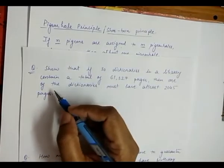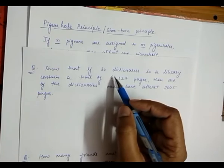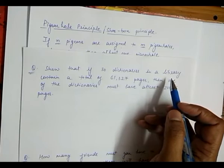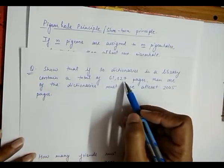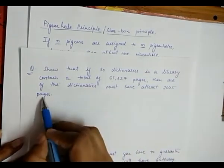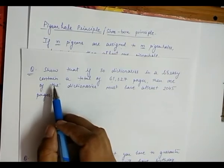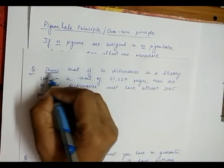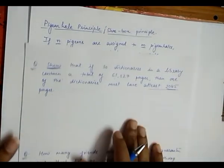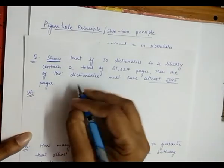Now we take another example using the extended pigeonhole. The question says: show that if 30 dictionaries in a library contain a total of 61,327 pages, then one of the dictionaries must have at least 2045 pages. In this question we do not calculate a new value; we only need to prove or show that at least 2045 pages are required.